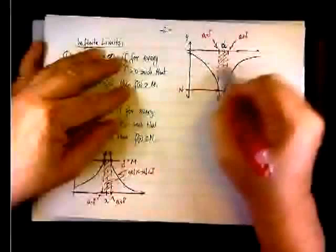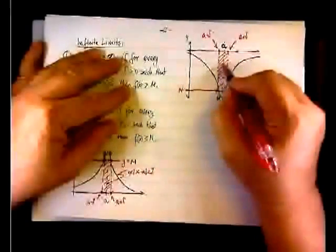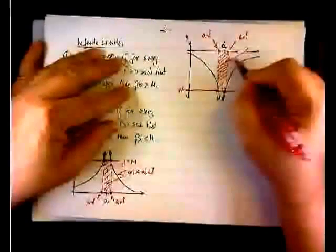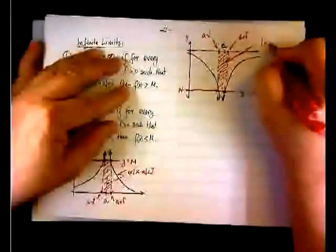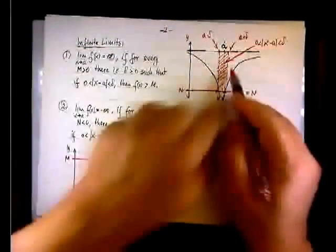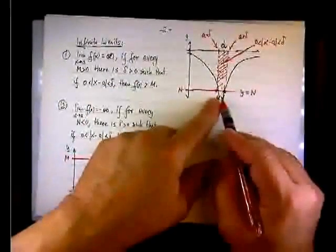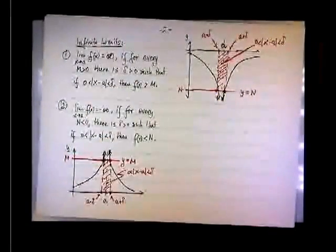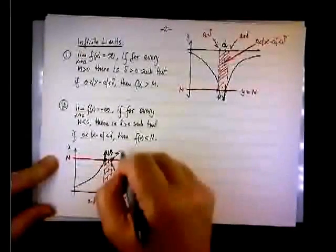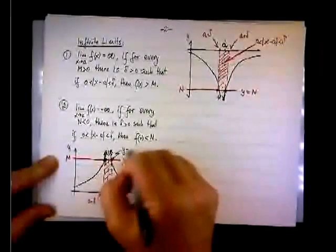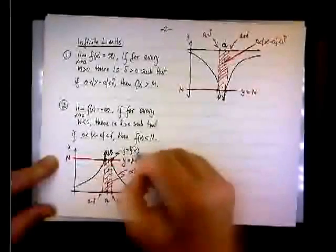And every point right there will have x value such that x minus a is less than delta and positive. So if we pick up x value inside the sleeve, it's guaranteed that f of x will be less than n.